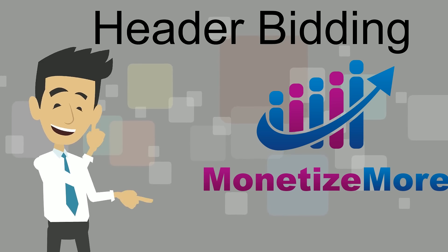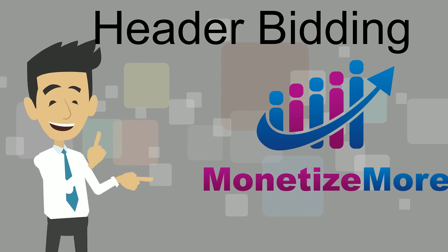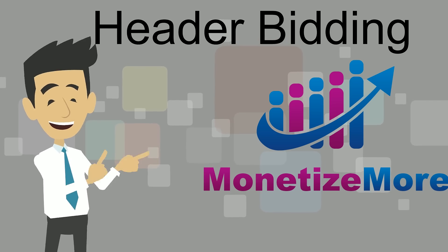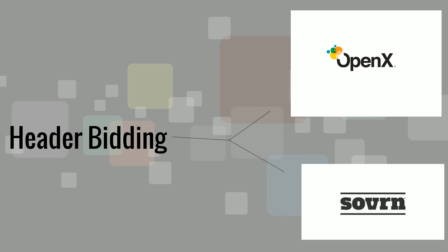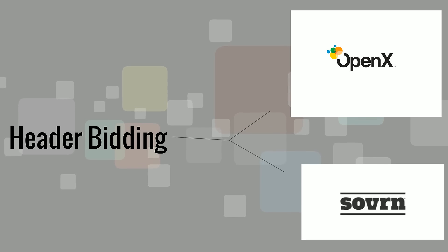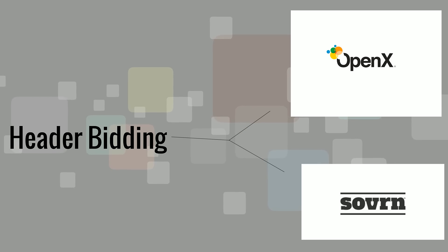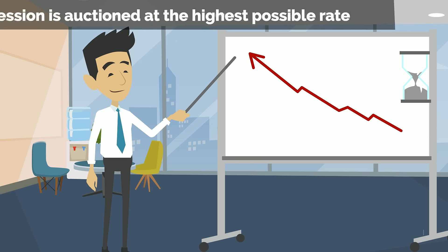Header bidding solves this problem. Unlike waterfalling, publishers offer their ad inventory to different networks at the same time, allowing them to bid against each other simultaneously. Without preferential treatment,